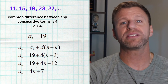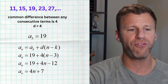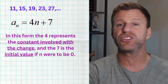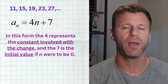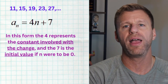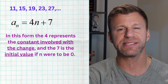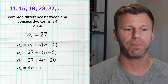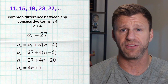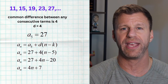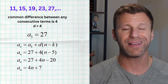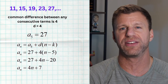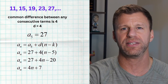In the form 4n + 7, the 4 is our constant rate of change and the 7 is like the initial value — the zeroth term if there were one. Now, you can pick any term you want, so let's verify using the fifth term, which is 27. Plugging in d = 4, k = 5, a sub k = 27: distributing gives 4n minus 20, combining with 27 gives 4n + 7 — the exact same result. It doesn't matter which term you use.